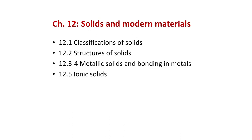Let's get into chapter 12 to wrap this up so we can spend more time reviewing at our final lecture on Wednesday. In chapter 12 we'll cover classifications of different types of solids, a few different structures of solids, what we can infer from lattice structures, metallic solids and bonding in metals, and ionic solid bonding examples.